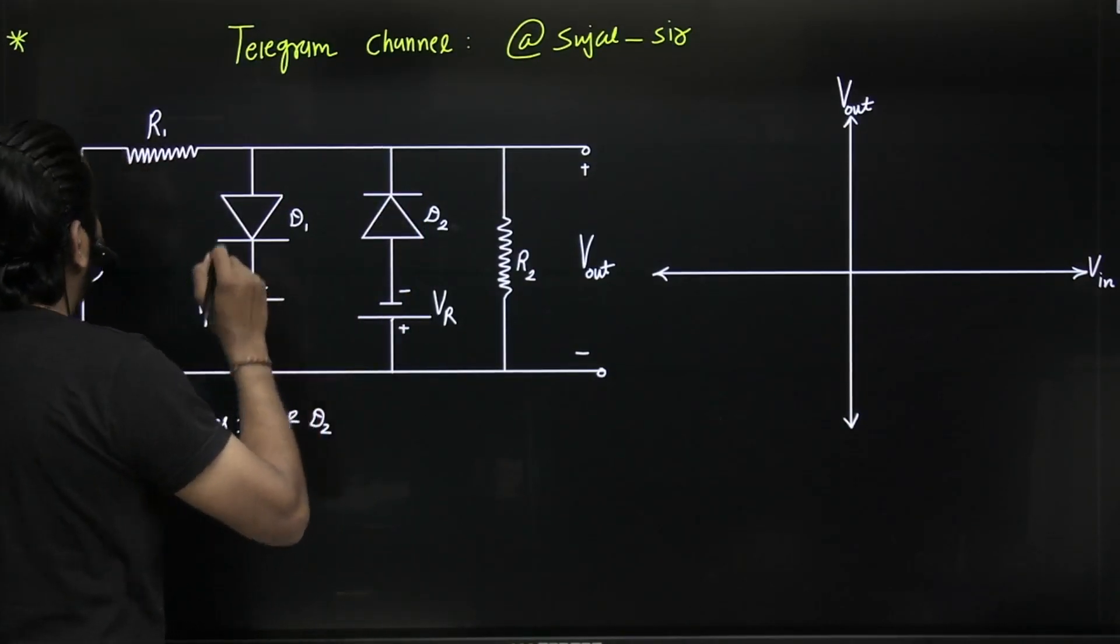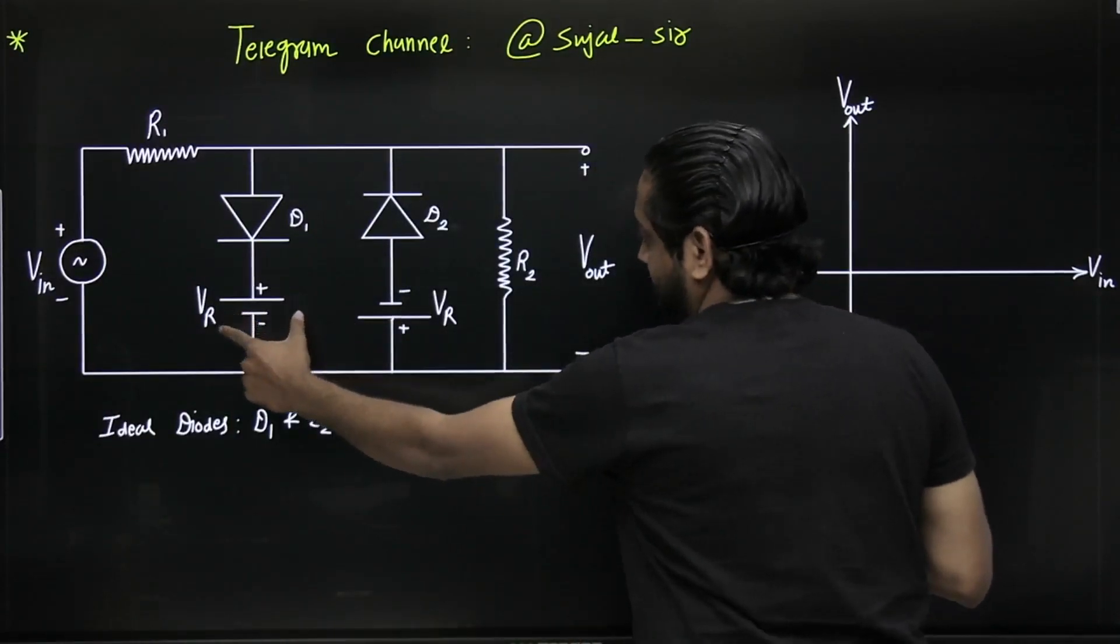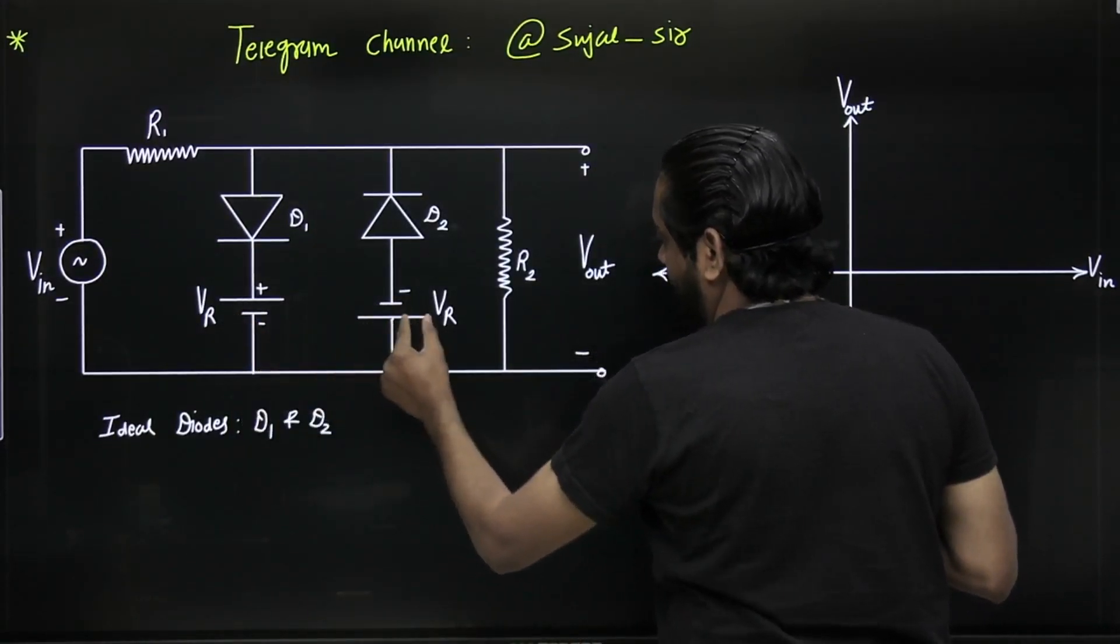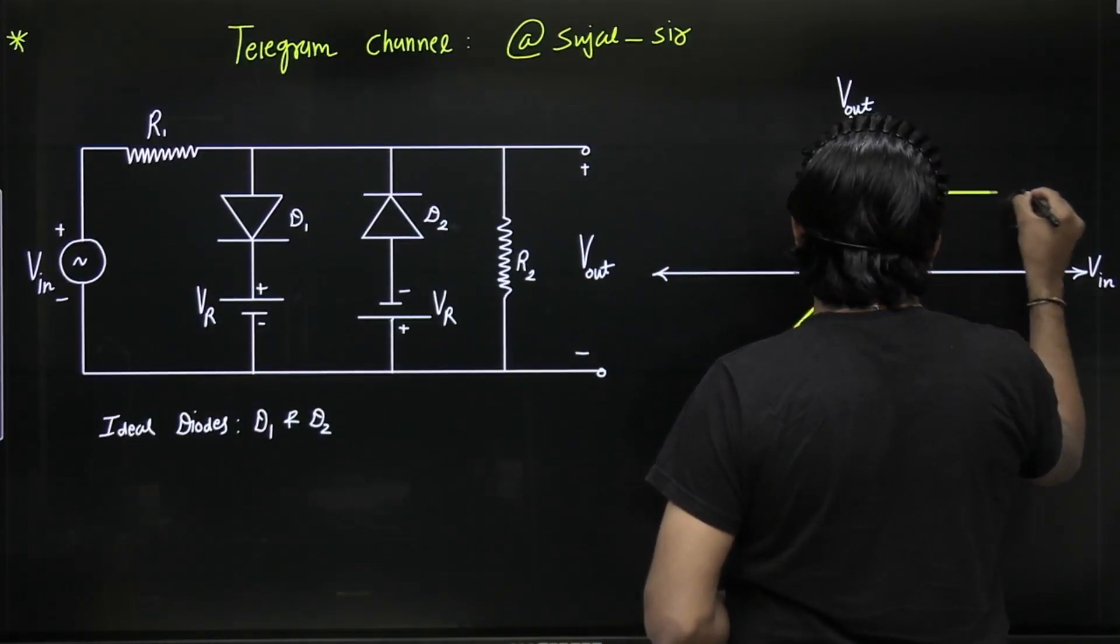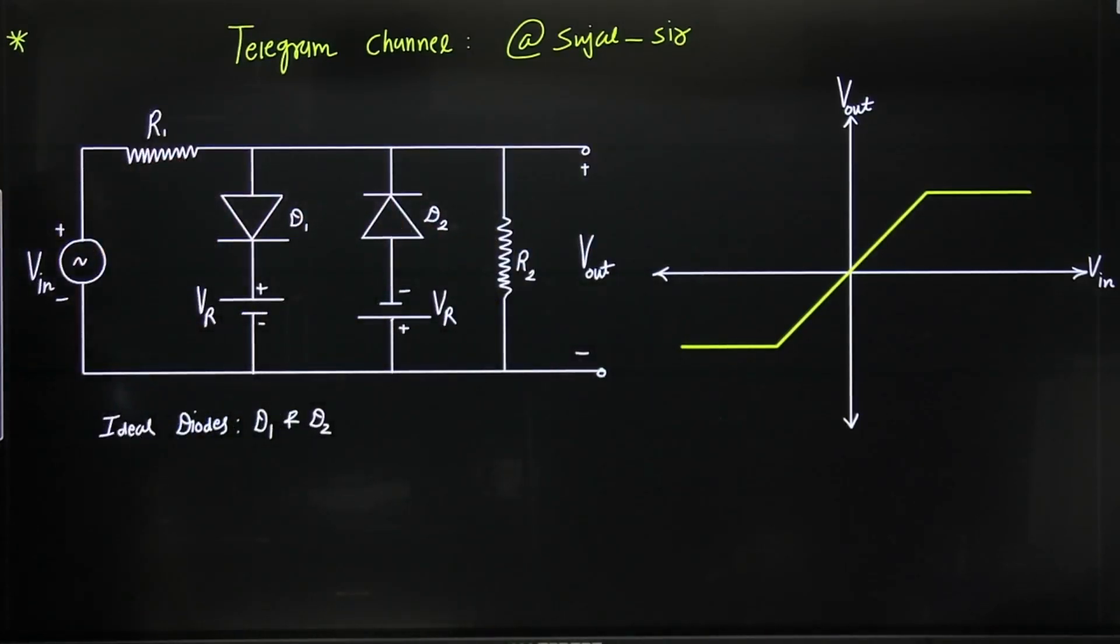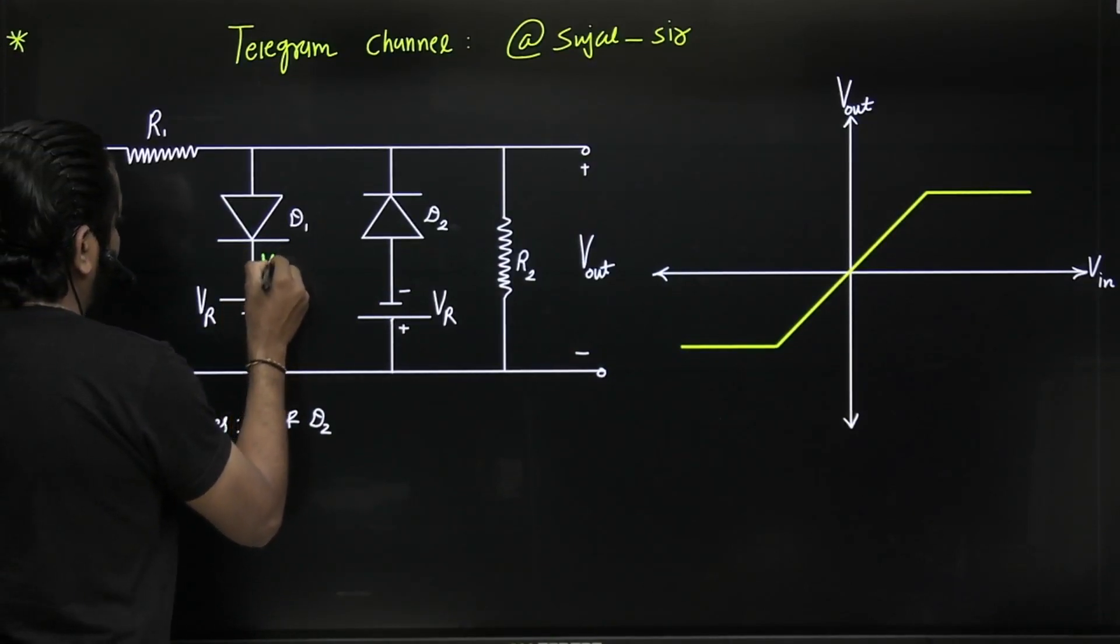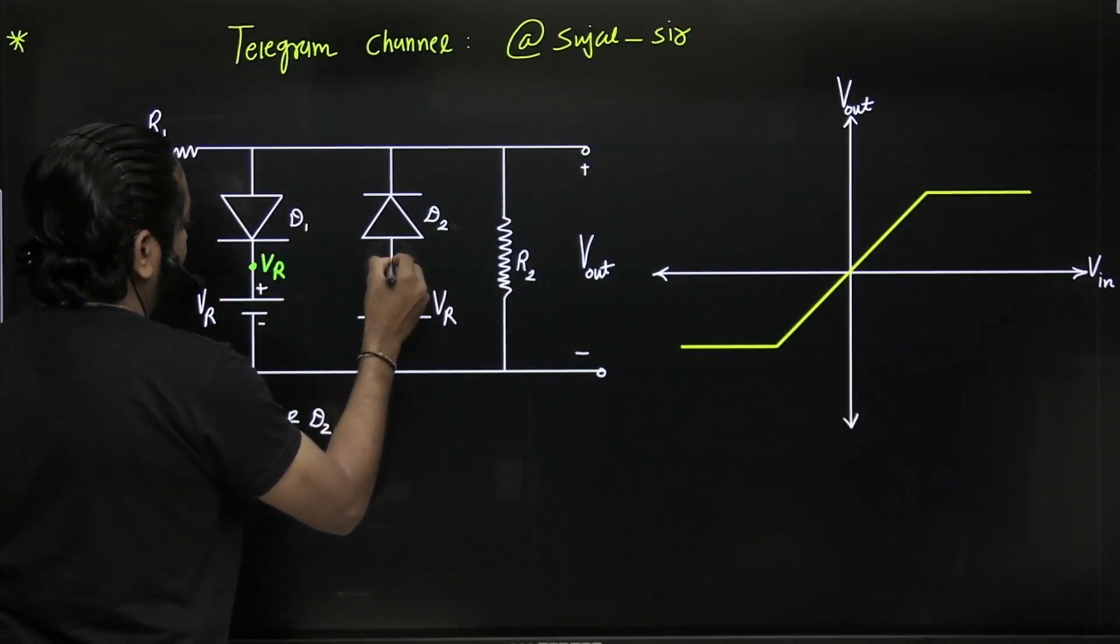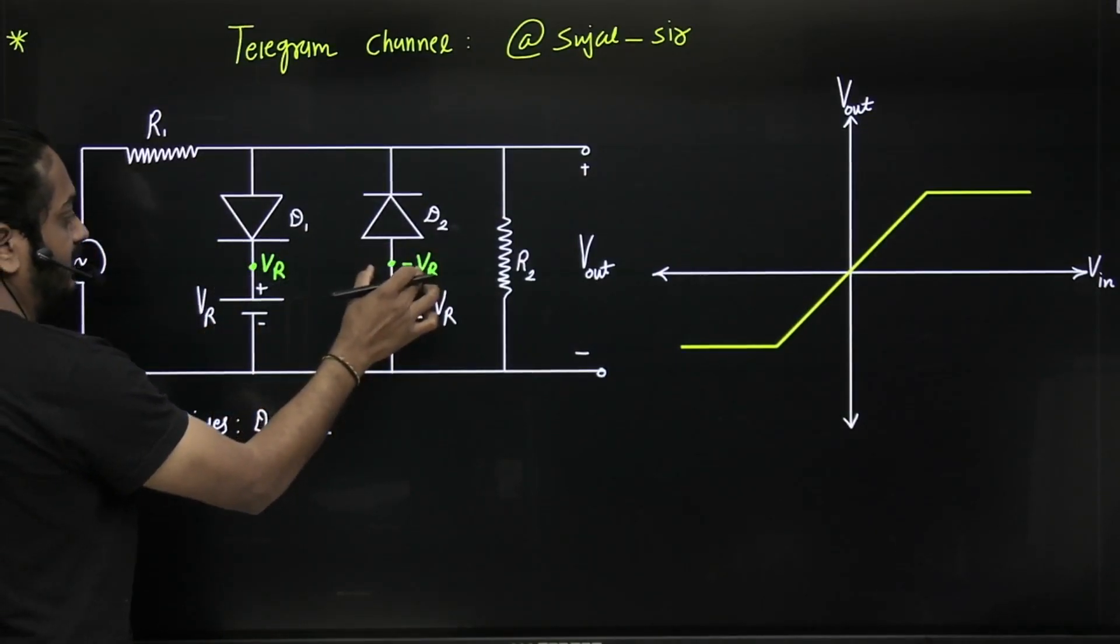Here this is positive with respect to ground and this is negative with respect to ground. So the transfer characteristic will always be like this. Here you have to mark Vr and here this is minus Vr. Of course, this should be greater than this.